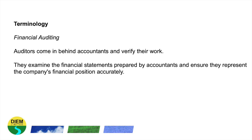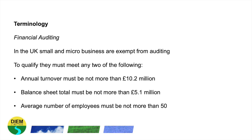In the UK, small and micro-sized businesses are exempt from auditing. To qualify, they must meet any two of the following: their annual turnover must not be more than £10.2 million a year; the balance sheet total must not be more than £5.1 million; and the average number of employees must not be more than 50.